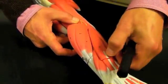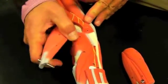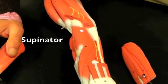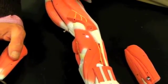Now, deep to those muscles in the posterior compartment of the forearm is a muscle called the supinator. So this turns the hand, the palm, upwards as opposed to the pronator teres, which turned it downward.